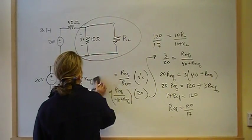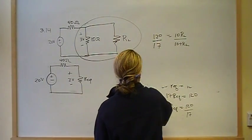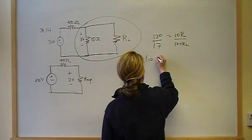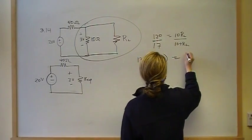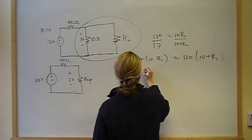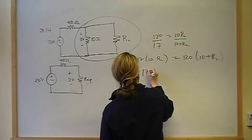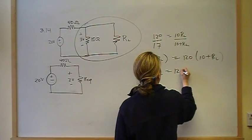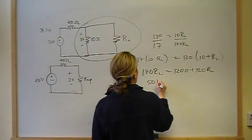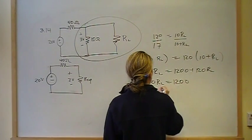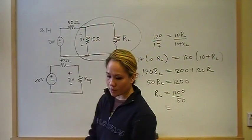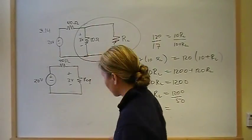And now, cross multiply to solve for RL. 17 times 10 RL is equal to 120 times 10 plus RL. So, 170 RL is equal to 120 RL. 50 RL is equal to 1200. RL is equal to 1200 divided by 50. And that is equal to 34 ohms.